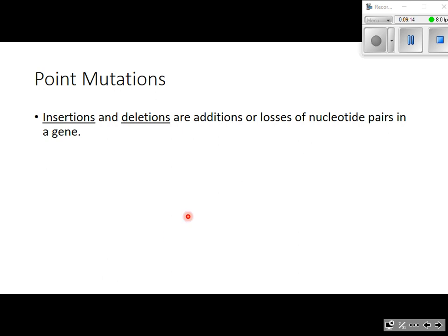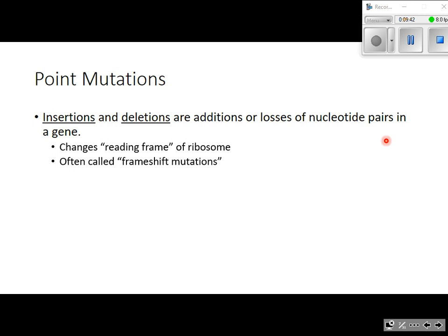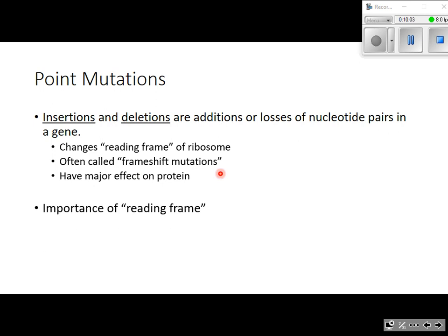There are three different types of point mutations. We'll discuss insertions and deletions first, then substitutions. Insertions are additions of nucleotide pairs, and deletions are the removal or loss of nucleotide pairs in a gene — and these are particularly catastrophic. Insertions and deletions have a major effect on the protein because they tend to change the reading frame of the ribosome, so we often refer to them as frameshift mutations.